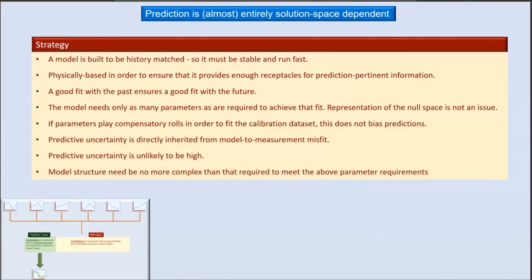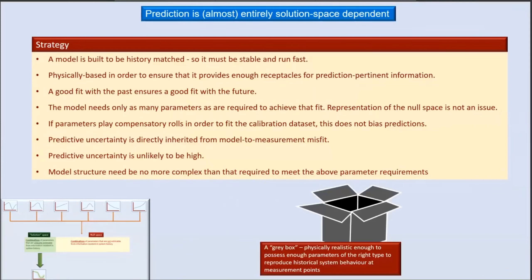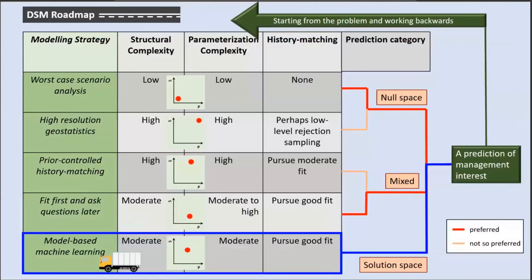Black box or machine learning models can still serve this prediction-data category well, but physically based models are still useful because they provide tailor-made parameter receptacles for history matching. We need to be careful when moving into uncharted territory like climate change, because there may be null space parameters that become important — and when that happens, we're actually moving to another prediction-data category. Our job is solely to fit the data well, and this sits somewhere between physically based modelling and machine learning, requiring a moderate level of both structural and parameter complexity.